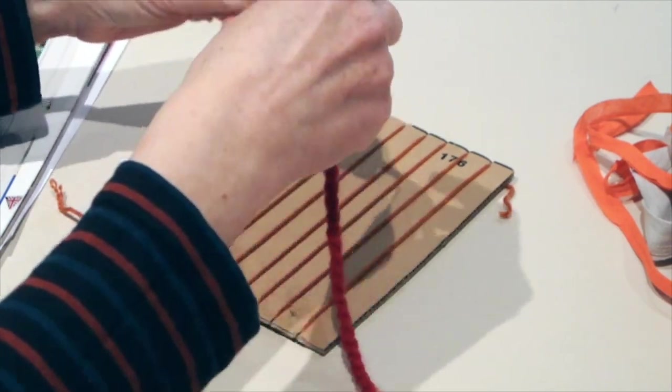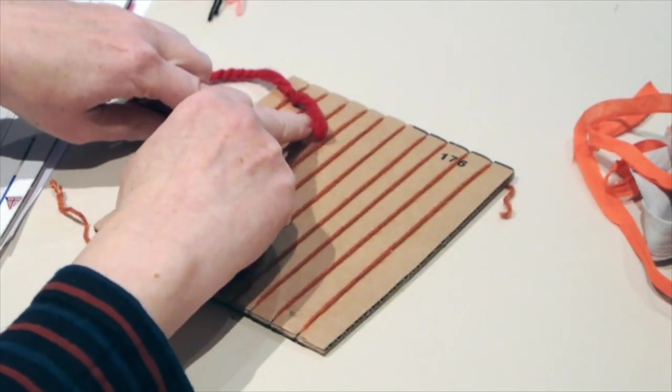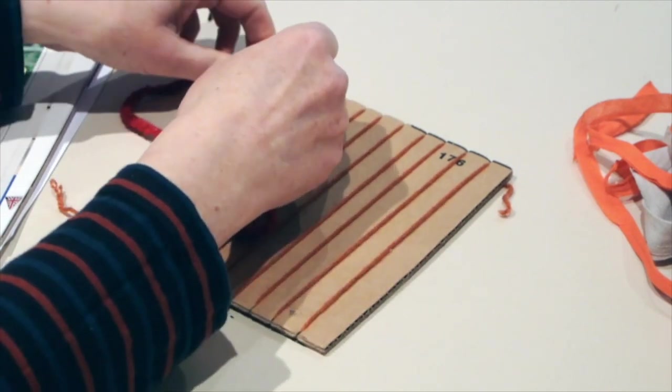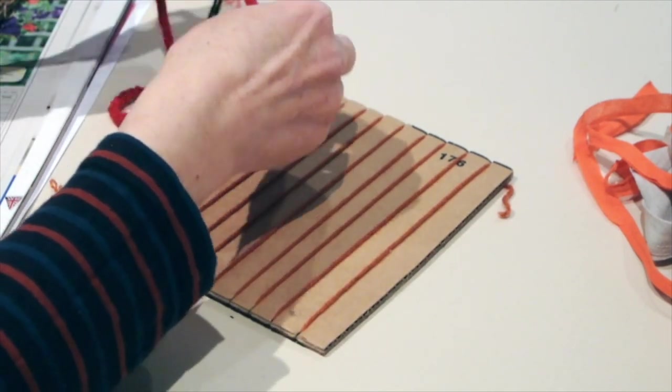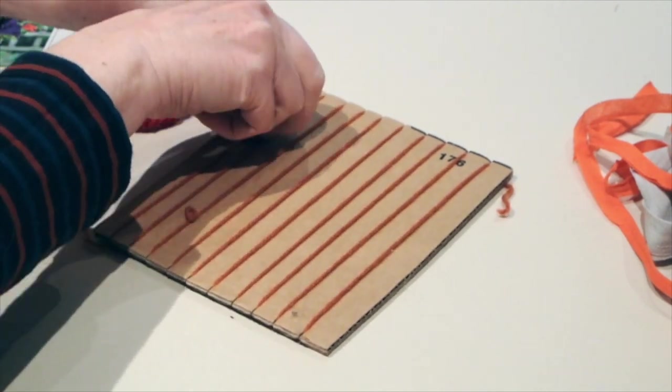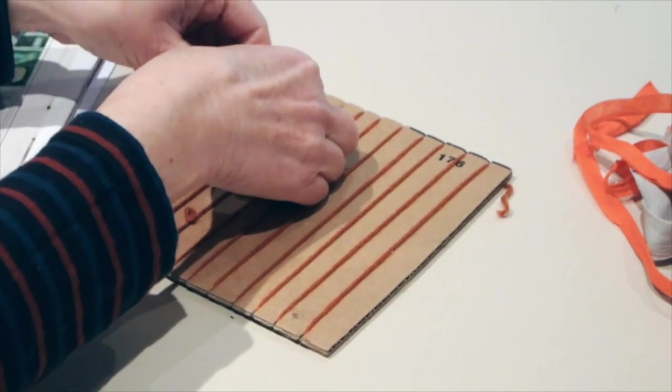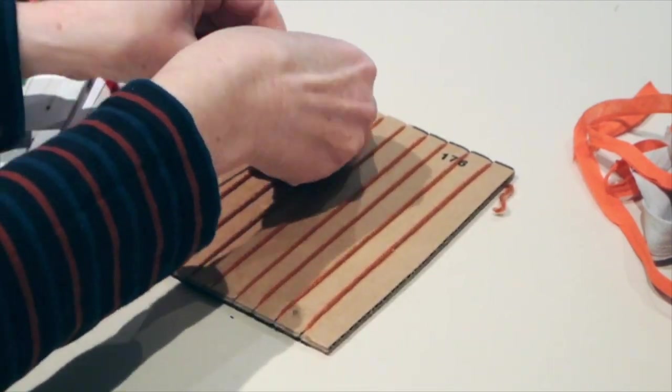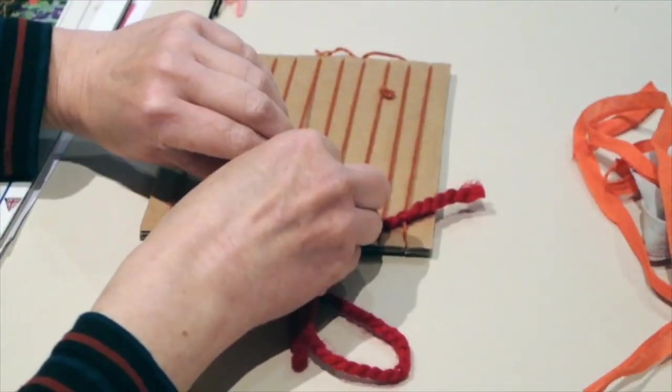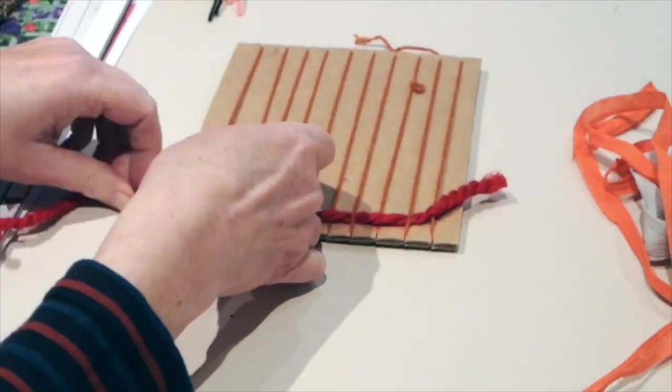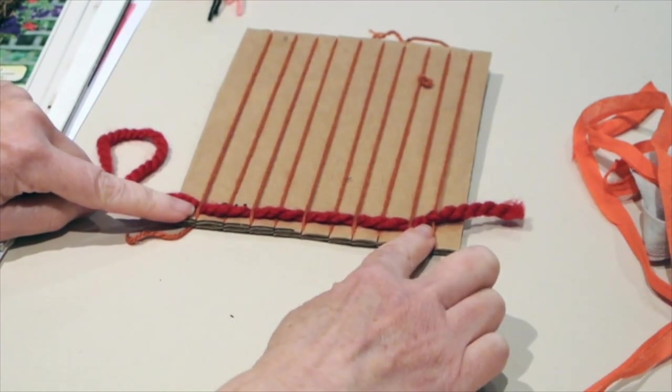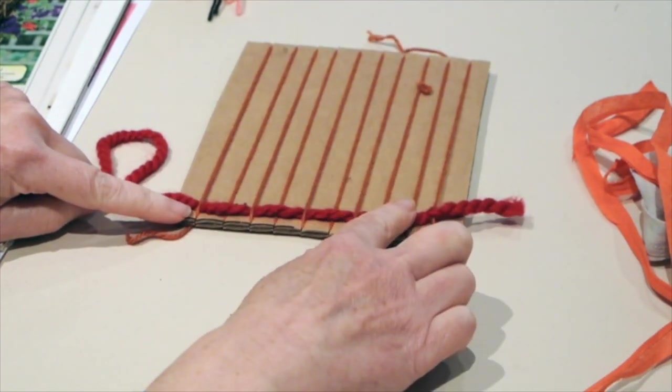Then what you need to do is weave it in and out of these strings. You need to think about going under and over as you work your way across the loom. Once I've done the first row, I now need to do the second row.